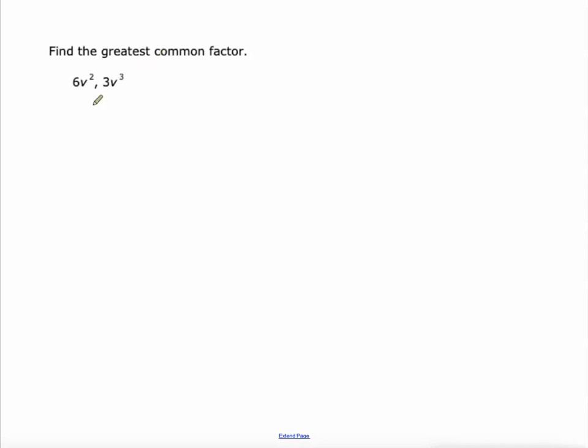Moving on. Two more monomials here. We just break it up piece by piece. What's the greatest common factor of 6 and 3? Obviously, they're both divisible by 3.